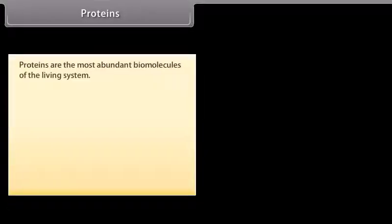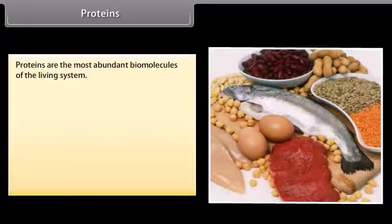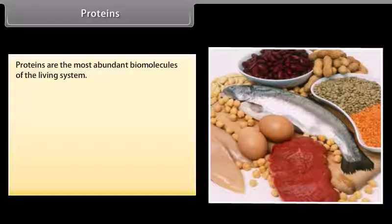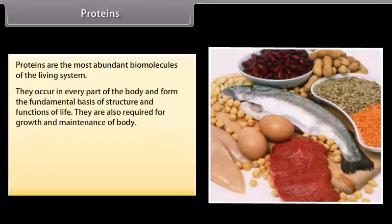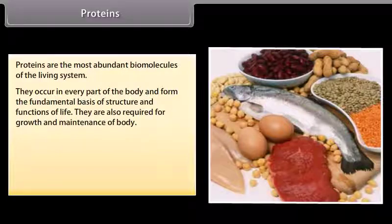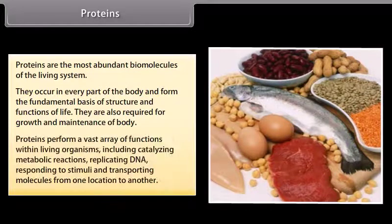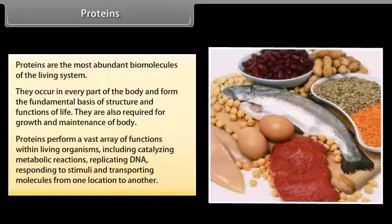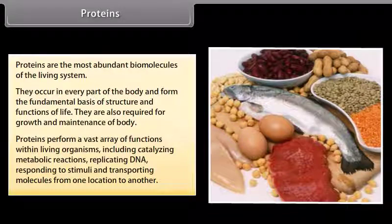Proteins are the most abundant biomolecules of the living system. Chief sources of proteins are milk, cheese, pulses, peanuts, fish, meat, etc. They occur in every part of the body and form the fundamental basis of structure and functions of life, and are also required for growth and maintenance. Proteins perform a vast array of functions within living organisms, including catalyzing metabolic reactions, replicating DNA, responding to stimuli, and transporting molecules from one location to another.